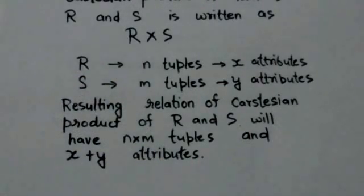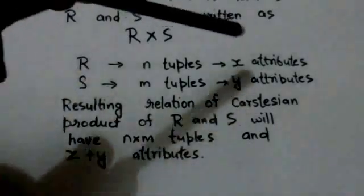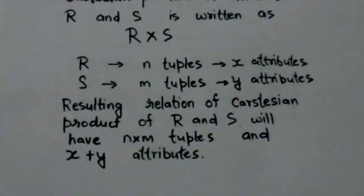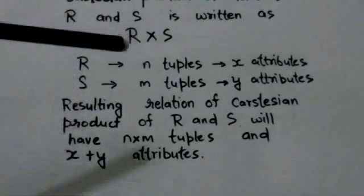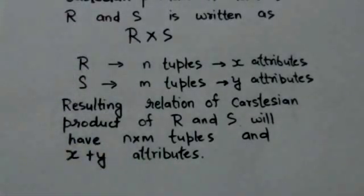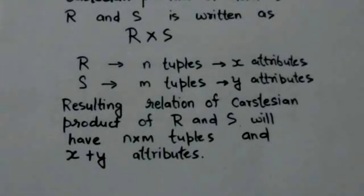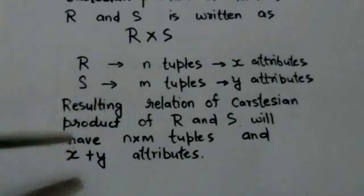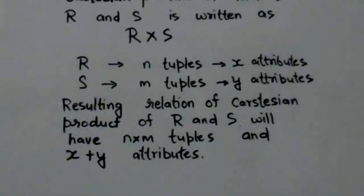If relation R has X number of attributes and relation S has Y number of attributes, then the resulting relation of Cartesian product of relations R and S will have X plus Y number of attributes.